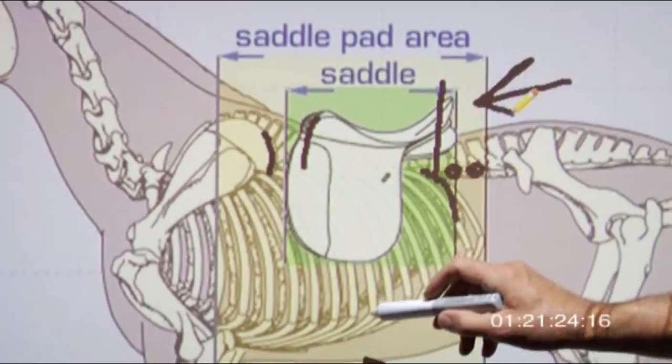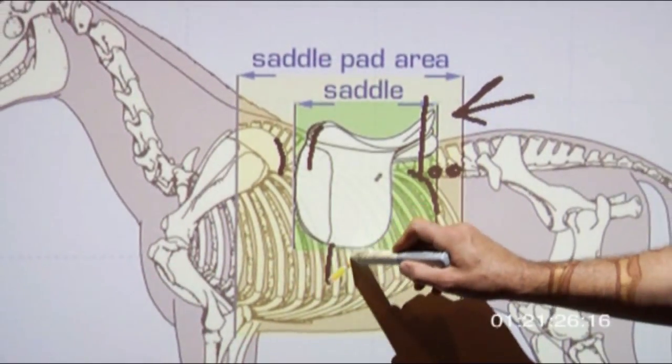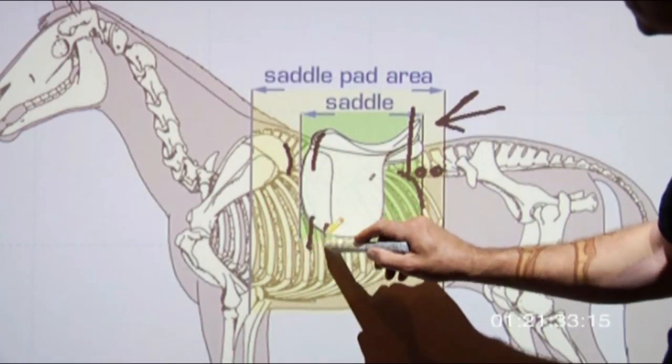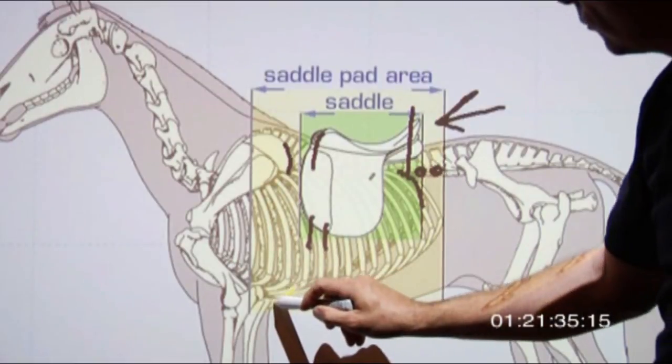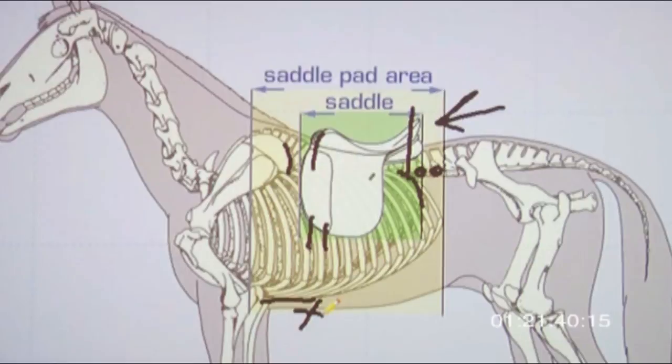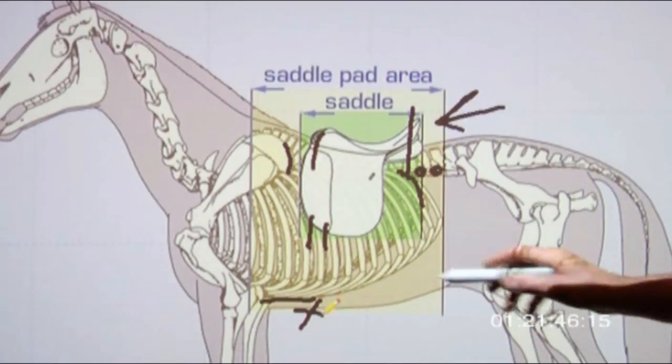Look how far back the billets are. Now if they would come out of the front, even if you're moving the billets far forward, you can see this sternum here. The billets in the most forward position would hit the solar plexus of the horse, and the horse would jump away from it. The girth will be pulling the saddle into forward movement.